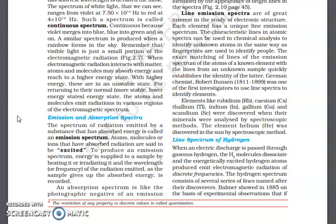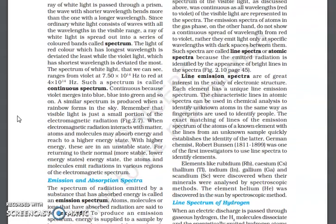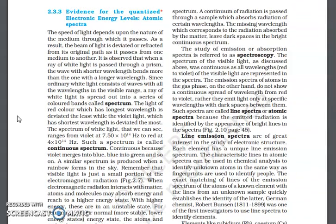So emission and absorption spectrum — you must have understood what they are. Absorption spectrum is basically the opposite of emission spectrum. An absorption spectrum is like the photographic negative of an emission spectrum. When a continuous radiation is passed through a sample which absorbs radiation of certain wavelengths, the missing wavelengths leave dark spaces in the bright continuous spectrum.